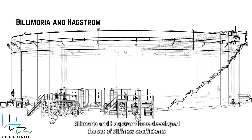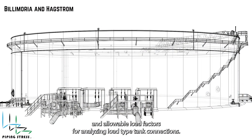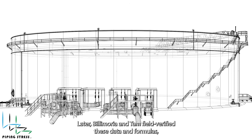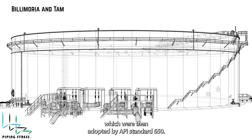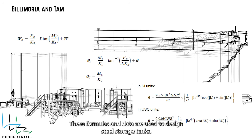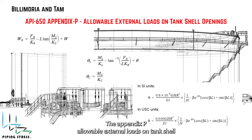Bilimoria and Hagstrom developed a set of stiffness coefficients and allowable load factors for analyzing low-type tank connections, using information generated by their proprietary computer program and their company's experiences. Later, Bilimoria and Tam field-verified these data and formulas, which were then adopted by API Standard 650. These formulas and data are used to design steel storage tanks; Appendix P — Allowable External Loads on Tank Shell Openings of API 650 — puts this evaluation approach into practice.